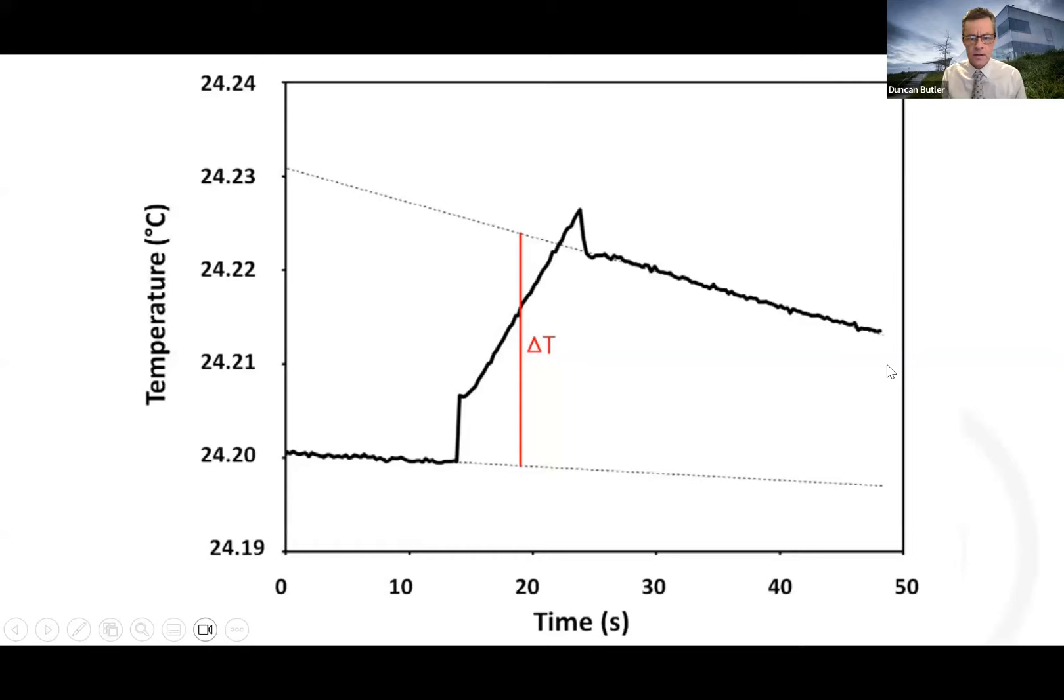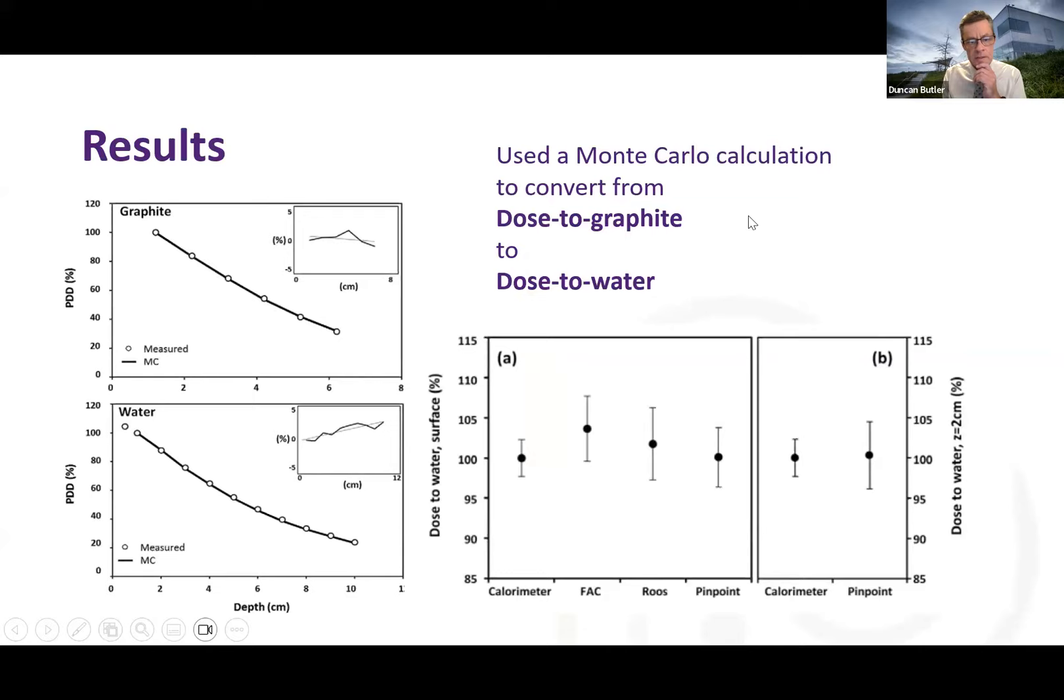And finally, the other difficult thing is this is a graphite calorimeter and we want dose to water. So we get that by modeling the depth dose in graphite, the depth dose in water. And if they agree, which they do in those two plots, we argue that the Monte Carlo can calculate the ratio between the two. And that's what we used here. And you see the calorimeter and the pinpoint actually agree really well in dose to water.